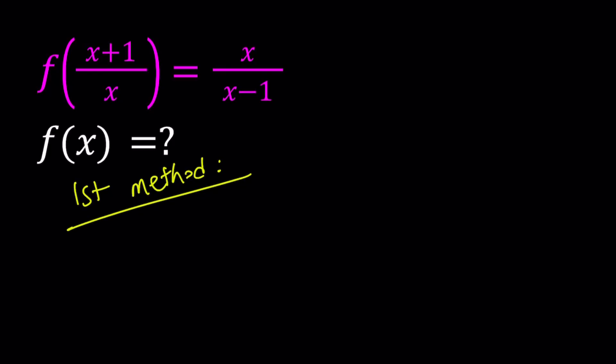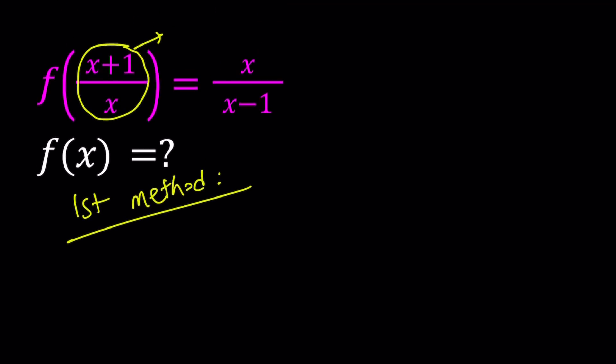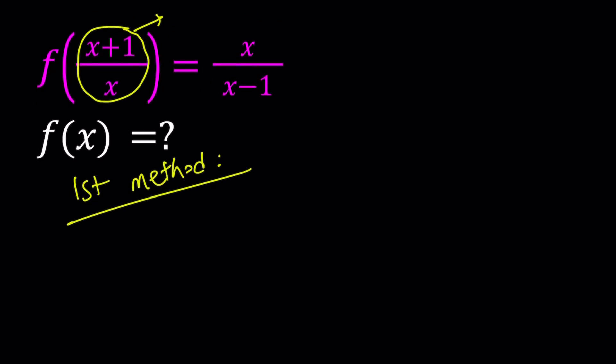My first method basically involves substitution, so I'm going to replace this with another variable. You can also replace it with x, but it's kind of confusing when you do it that way because we're not trying to solve an equation, more like working with variables. So let's go ahead and call this t. And from here we can find f of t and then we can easily turn it into f of x.